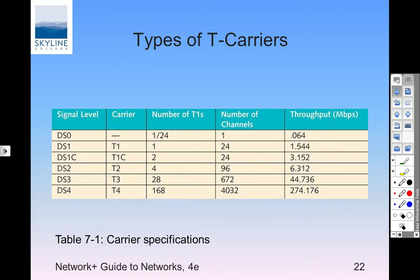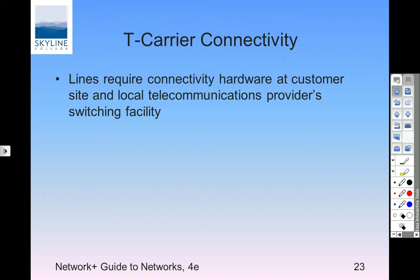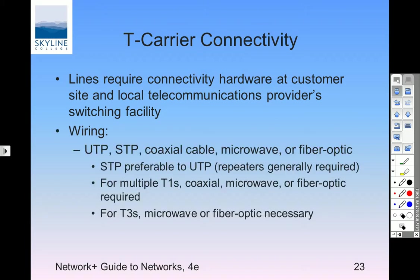T1 has 24 channels — you could dedicate part of it to different functions. You can split a T1 so some channels go to one thing and some to something else. The T1 line is digital; the CSU/DSU — channel service unit/data service unit — prepares the signal for transmission on the T1 line. Sometimes it's a standalone piece of equipment, or on modular routers you can get a module that plugs in — it's a little module with an RJ45 connector that says CSU/DSU or T1.